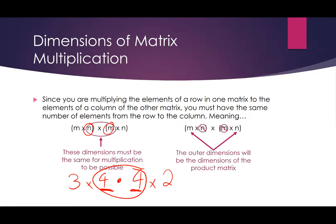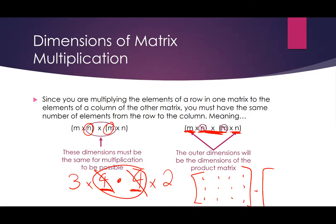Another neat feature: if those two middle values are the same, the leftover numbers are the dimensions of the new matrix. So if I had a 3 by 4 matrix multiplied by a 4 by 2 matrix, I'll be left with a 3 by 2 matrix as my answer. Some tricks about dimensions: we can only multiply matrices together if the two middle values are equivalent. We can do a 3 by 3 matrix times a 3 by 1 matrix, but we cannot do a 3 by 3 times a 2 by 3, because those middle values are not the same.